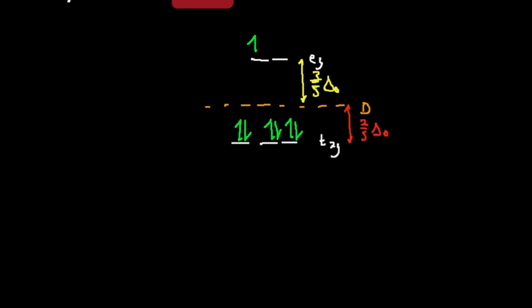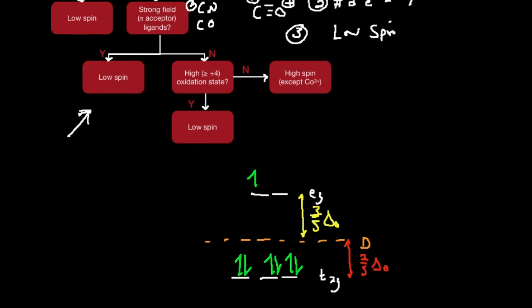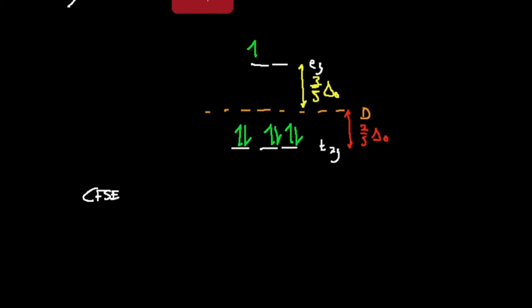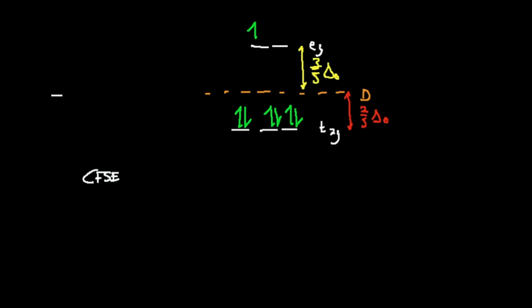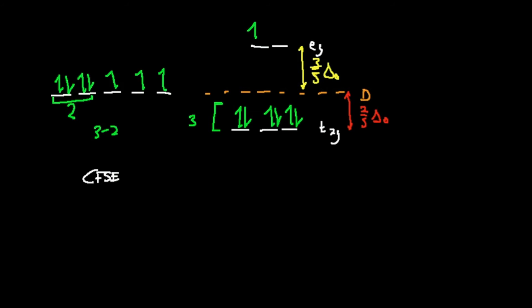Now I need to calculate the crystal field stabilization energy. Since this is low spin, we do have to worry about pairing energy. Let's draw the degenerate case: fill in seven electrons according to Hund's rule — one, two, three, four, five, then six and seven. How many orbitals here have paired electrons? Two. In the split crystal field pattern, how many orbitals have paired electrons? Three. So three minus two equals one — that's how many units of pairing energy I have to subtract.